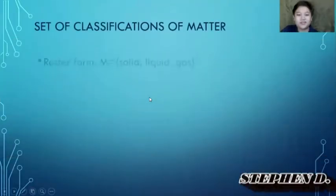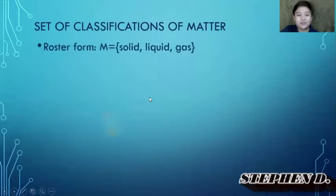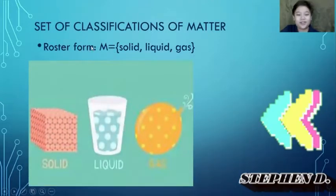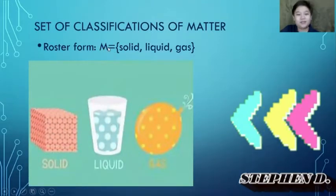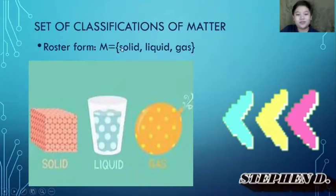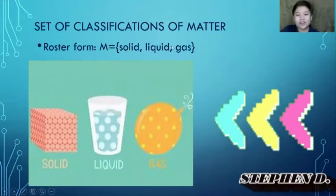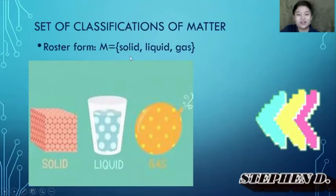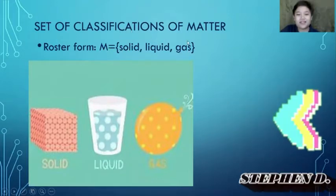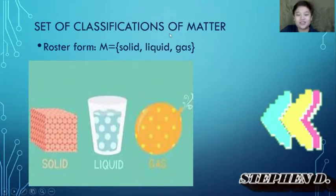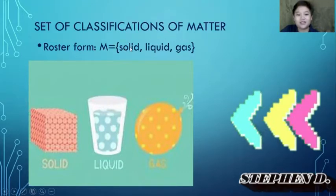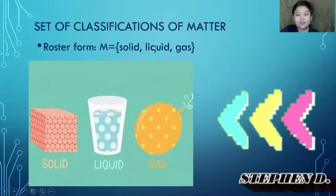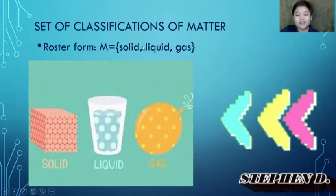Set of classifications of matter. The roster form is: M = {solid, liquid, gas}. Solid, liquid, and gas are elements of the set, so they are written in small letters, and between two elements there is a comma.